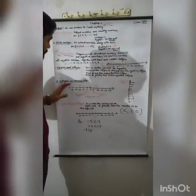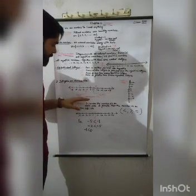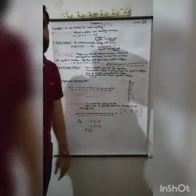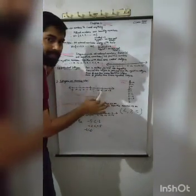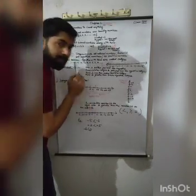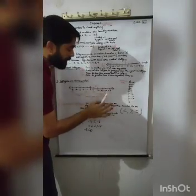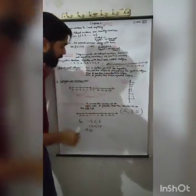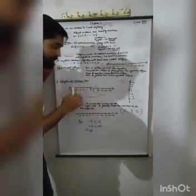Next point: how to represent integers on a number line. There are two types: a horizontal line and a vertical line. On a horizontal number line, we always place 0 in the middle. All positive integers are written on the right-hand side of 0, and all negative integers are written on the left side of 0.